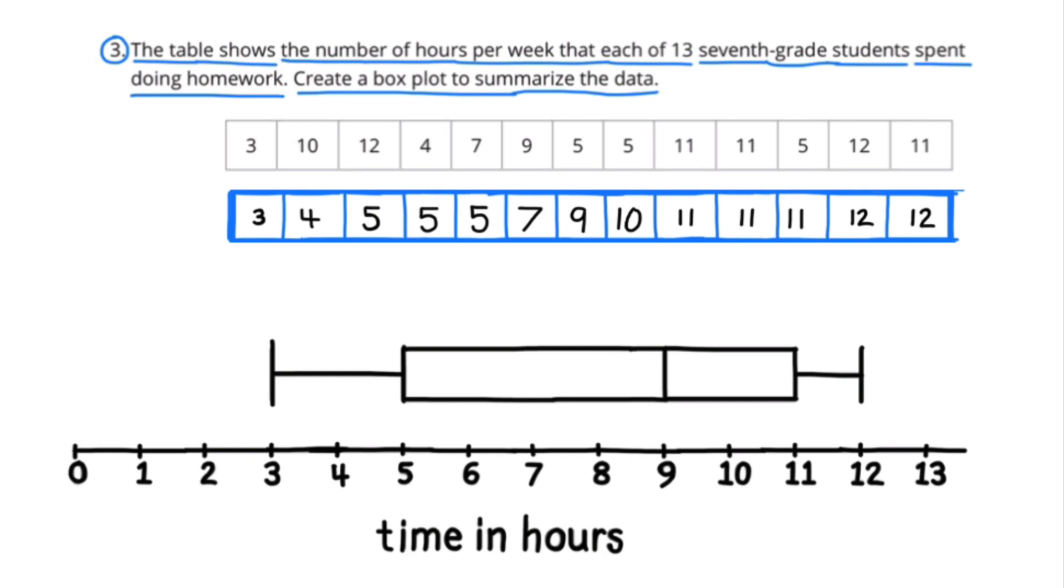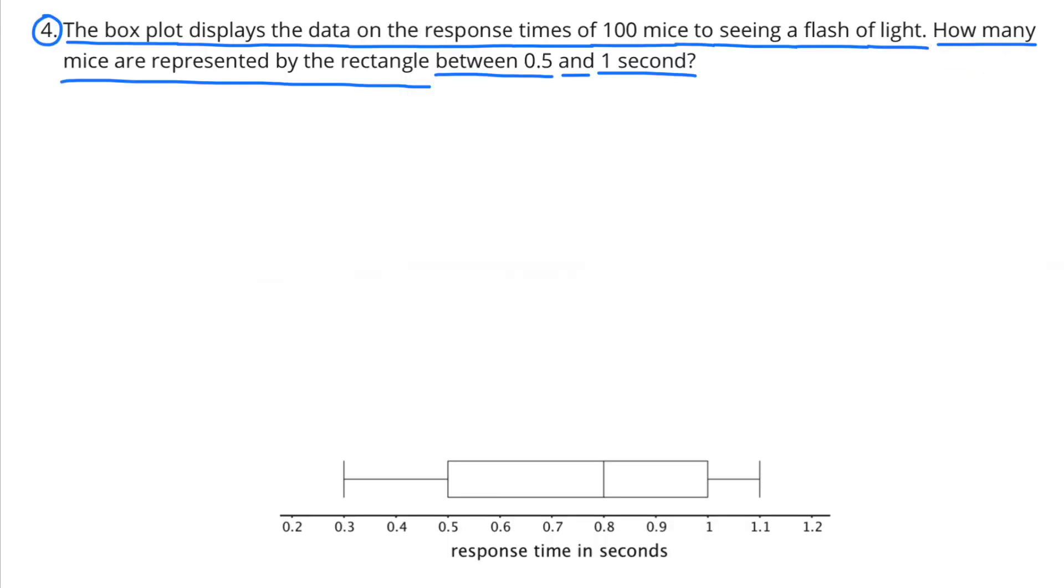Number four: The box plot displays the data on the response times of 100 mice to seeing a flash of light. How many mice are represented by the rectangle between 0.5 and 1 second?